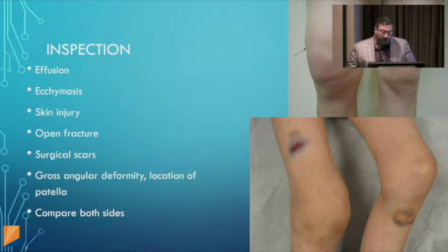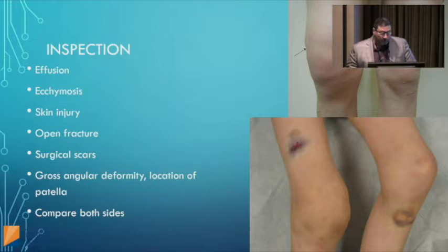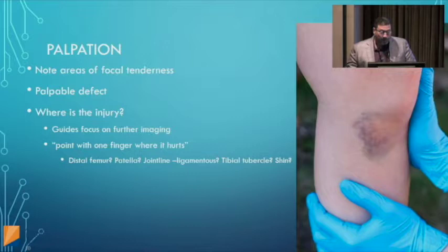Look for bruising — if you see dimpling, that's usually indicative of a fracture buttonholed through fascia. Look for surgical scars, and assess whether the leg looks crooked or straight. Compare to the opposite side whenever possible. On palpation, assess areas of tenderness, compare to the other side, and note any defects. If there's any bony tenderness, an x-ray should be performed.